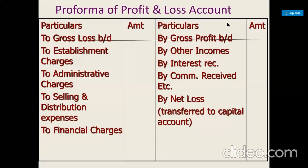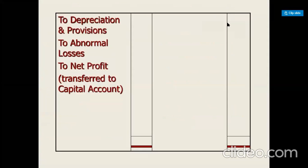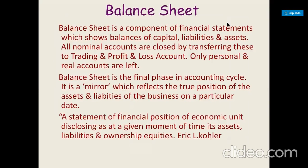The difference of income and expenses — if incomes are more — is termed as net profit, which will be transferred to the capital under balance sheet. If expenses are more, the difference is net loss, which is also to be adjusted in the balance sheet.